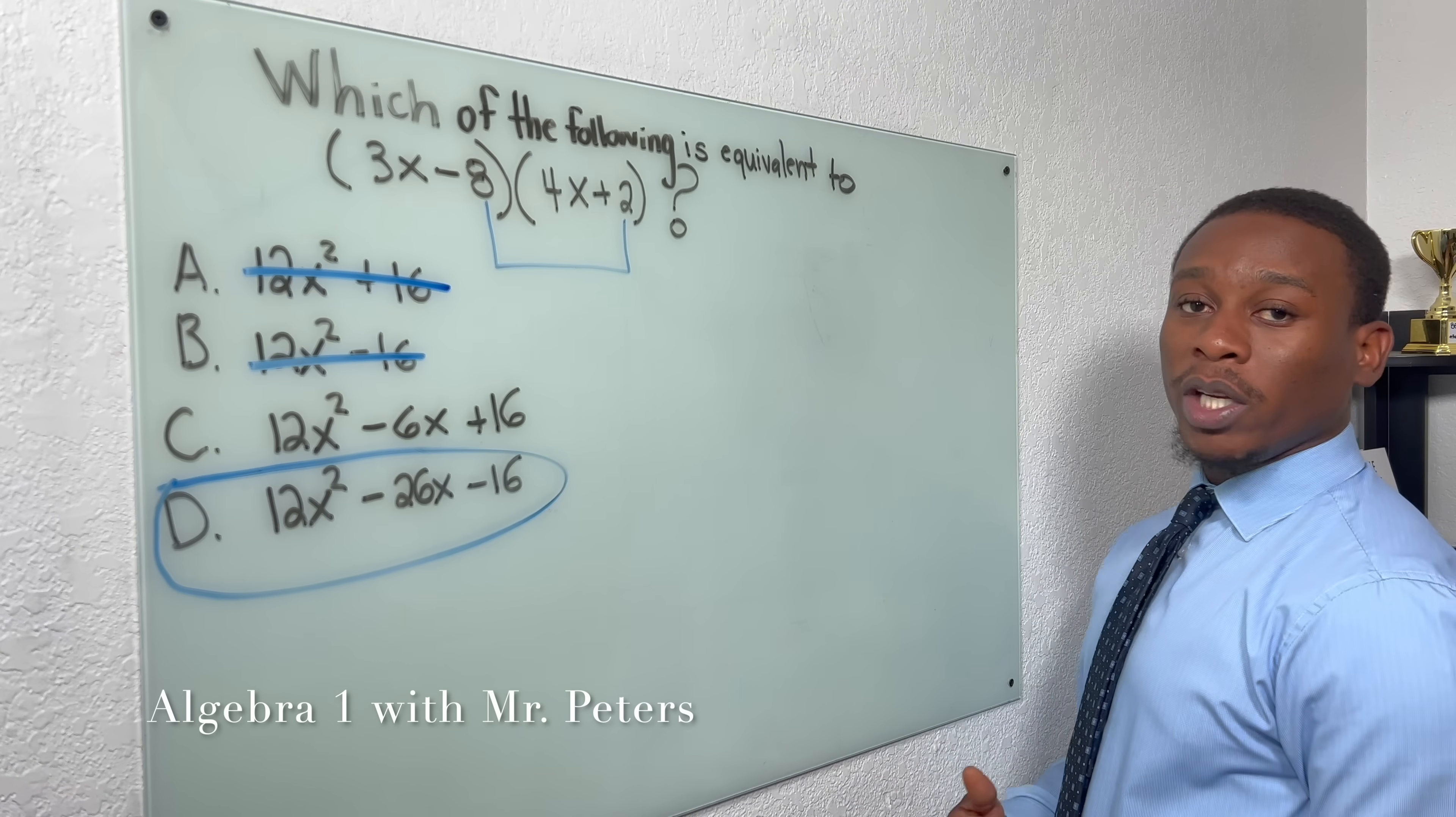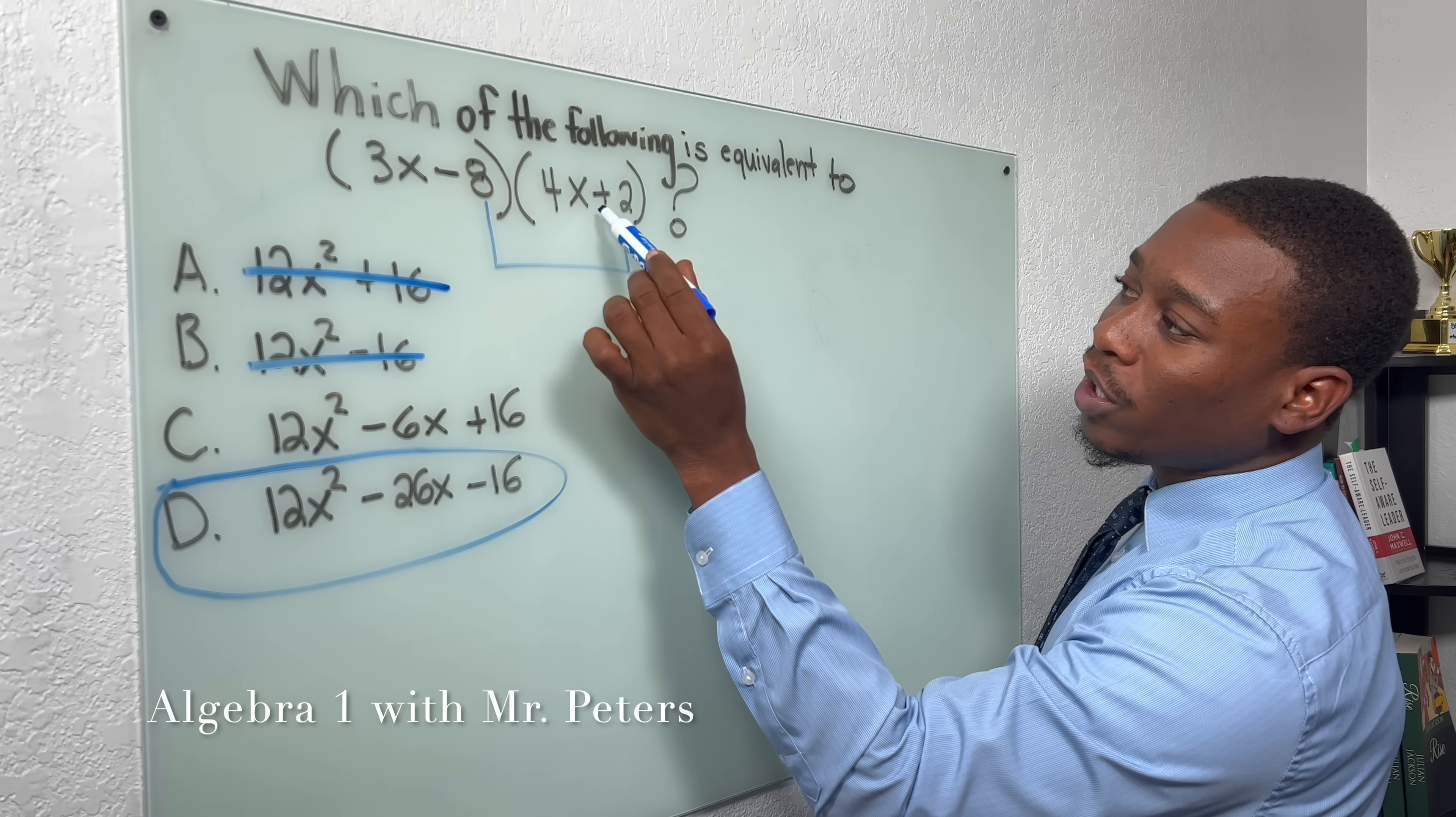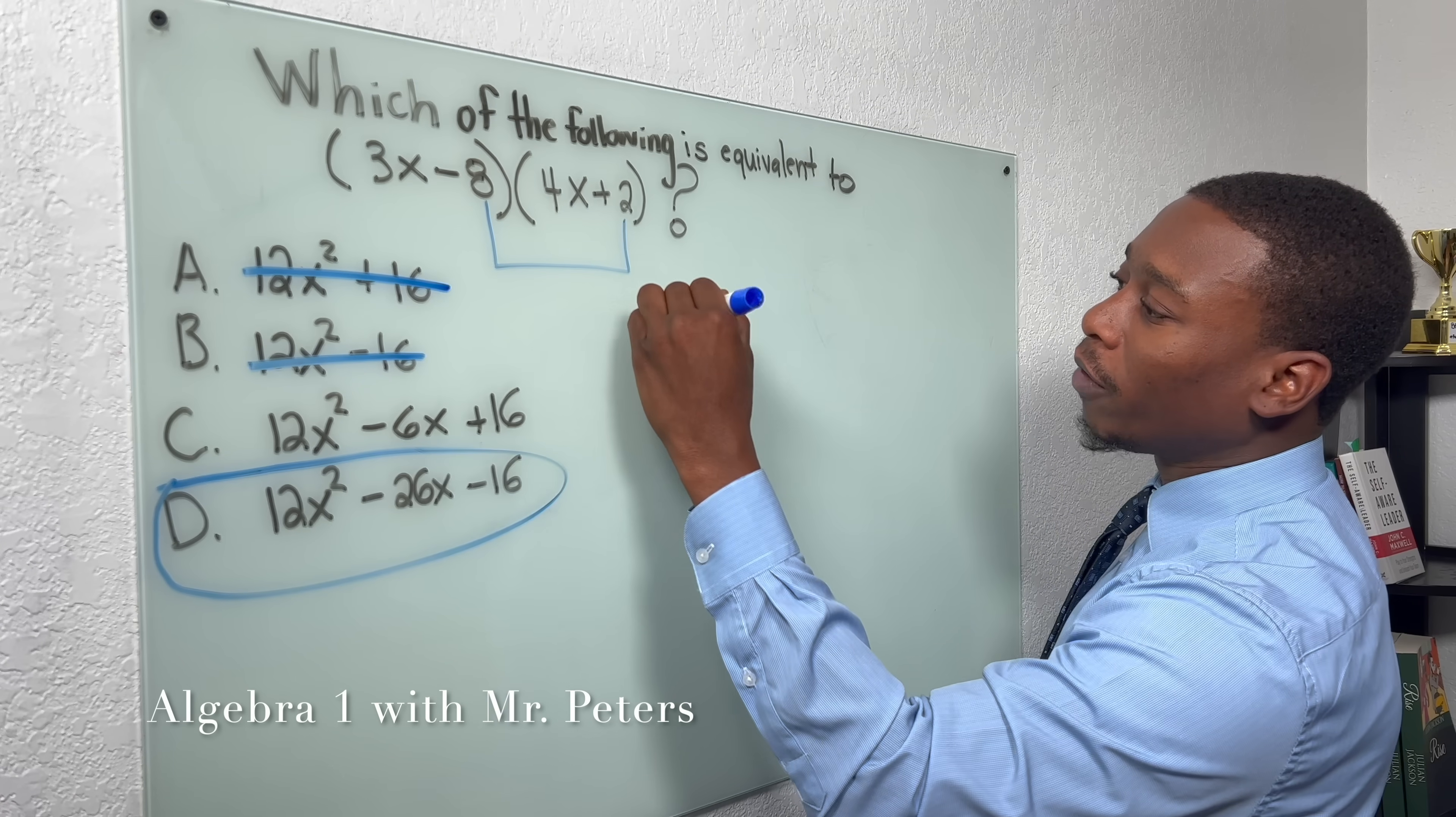But if we don't do it that way, guys, we can just FOIL, meaning I can multiply 3x by both of these terms, and then go back and do the same thing with negative 8.